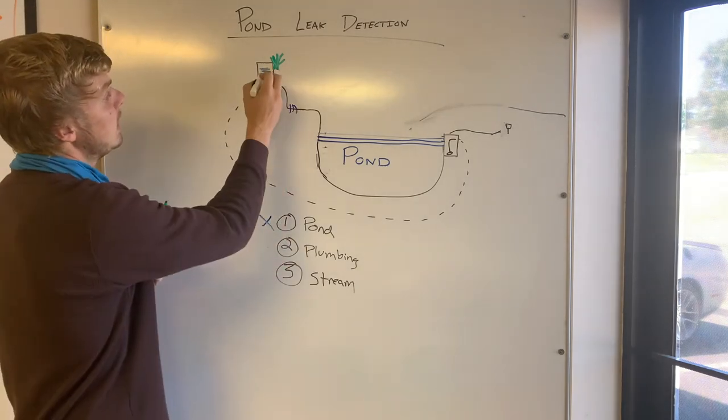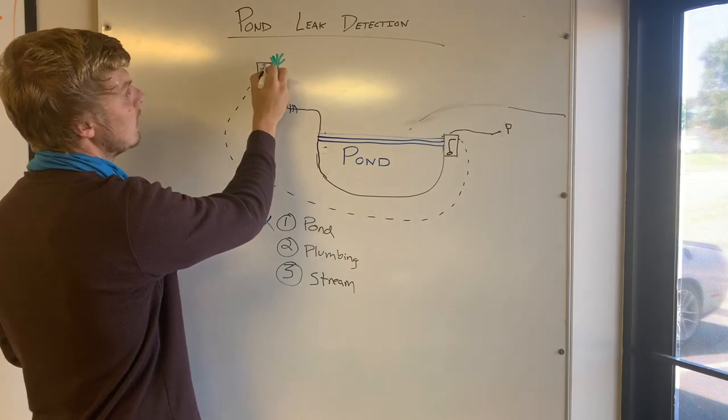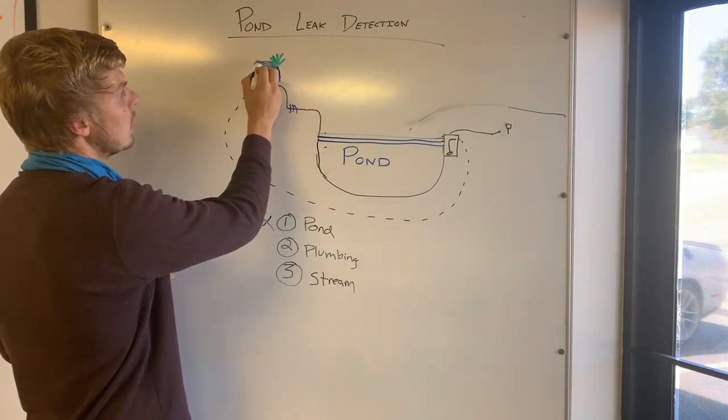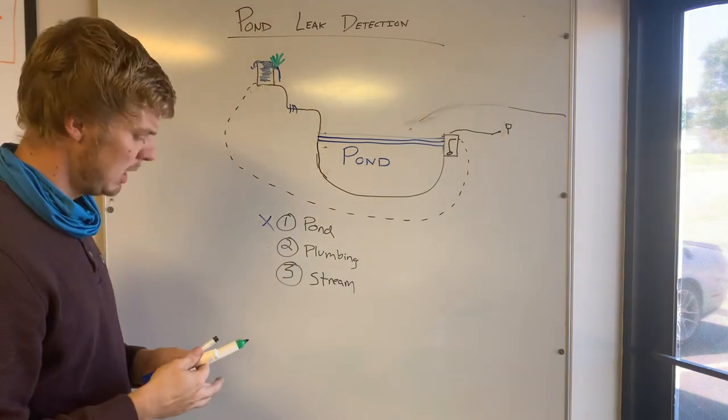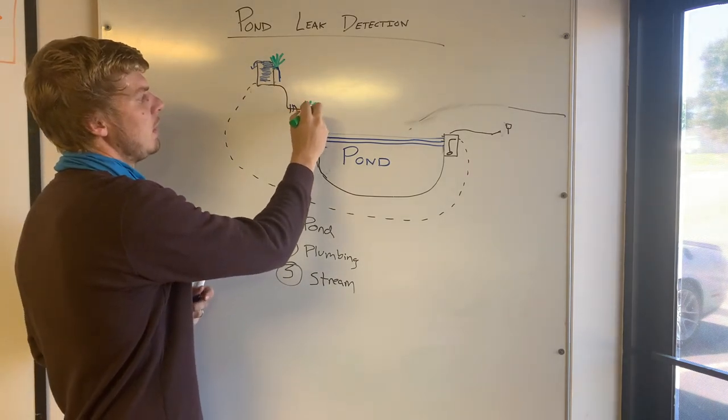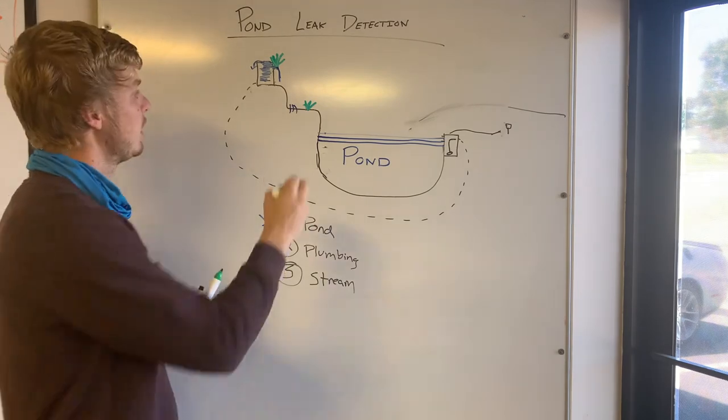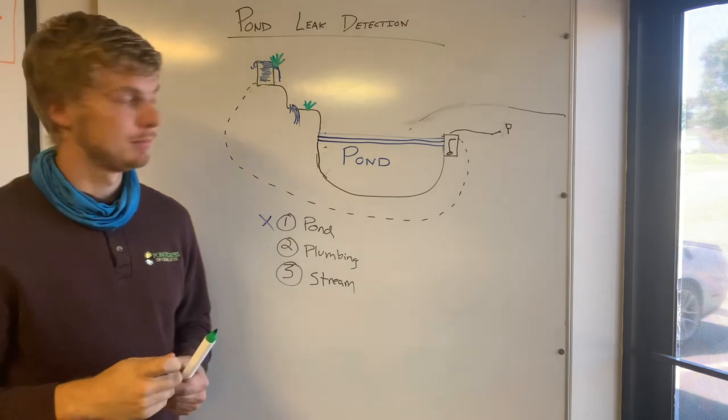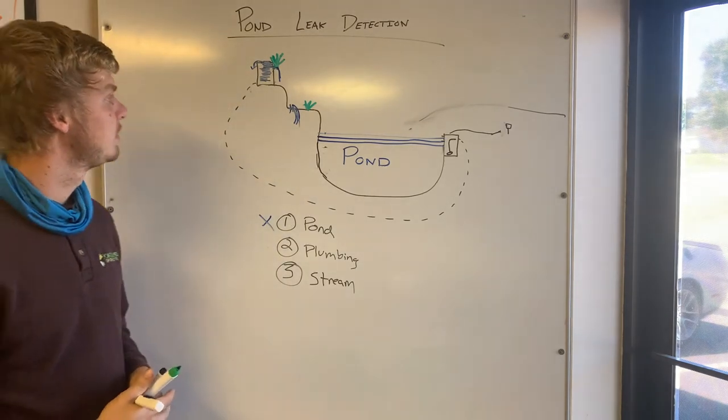And what could happen is this water that used to flow down like this could start getting dammed up by these plants and it could actually start leaking out the back of your biofalls. The same thing could happen in the stream as well. If you have a ton of overgrown plants in your stream it could be damming up the water and water could be escaping out the side of the liner where it once didn't.